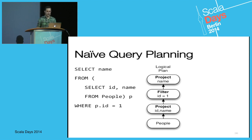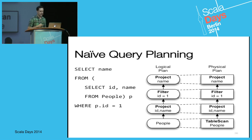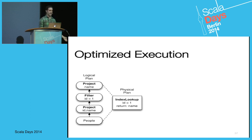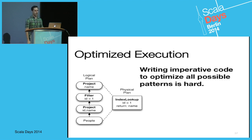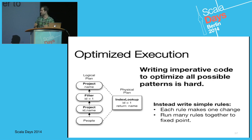A naive approach maps each logical operator directly to a physical operator: scan the entire people table, filter out unneeded columns, filter out unwanted tuples, and filter out more columns. But the fastest way would be to use an index — just do an index lookup on ID=1 and only return the name, with no reason to ship any other data over the network. Writing code to optimize all possible patterns is very difficult, so instead we write simple rules where each rule makes one change to the query plan hopefully making it faster. We put these into a group and run them over and over until we reach a fixed point.